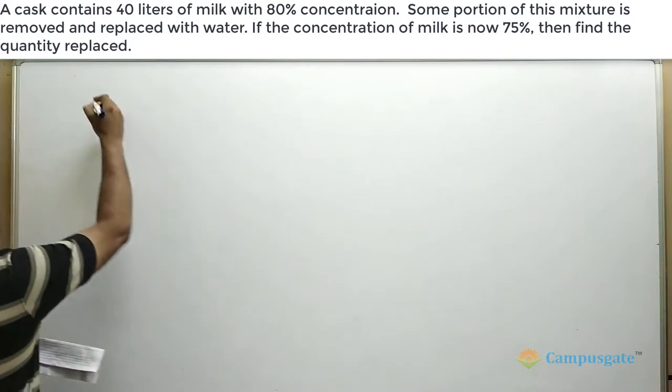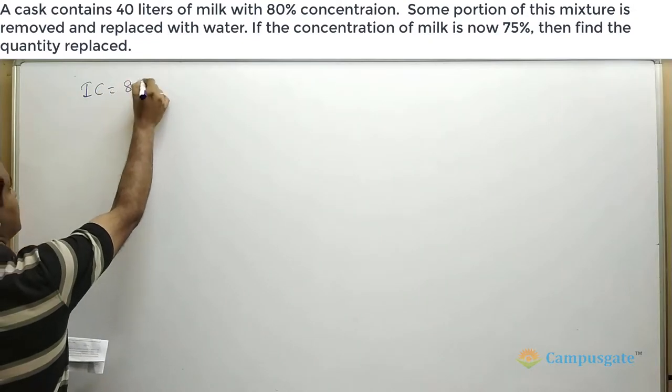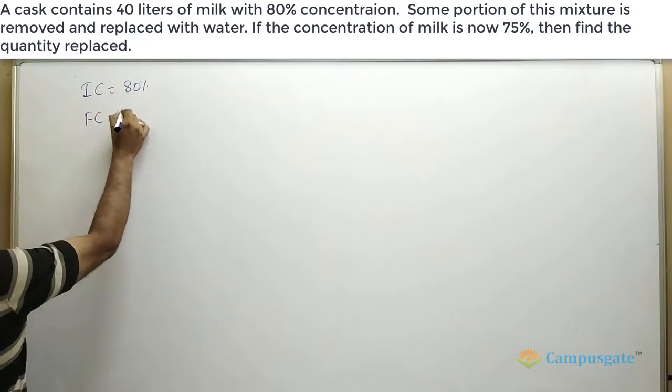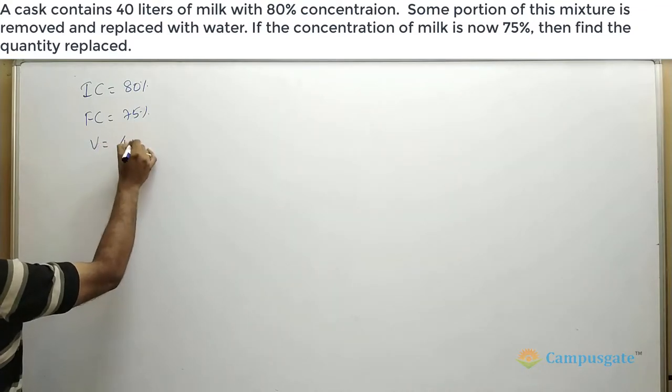So the initial concentration we will take it as 80 percent. The final concentration we can take it as 75 percent. The volume here is 40 liters.